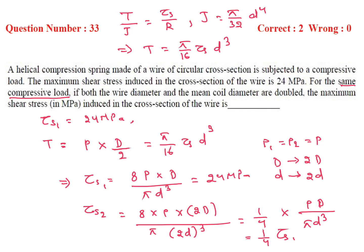So tau S2 equals tau S1 divided by 4 equals 24 divided by 4, giving us 6 MPa. 6 MPa is our answer.